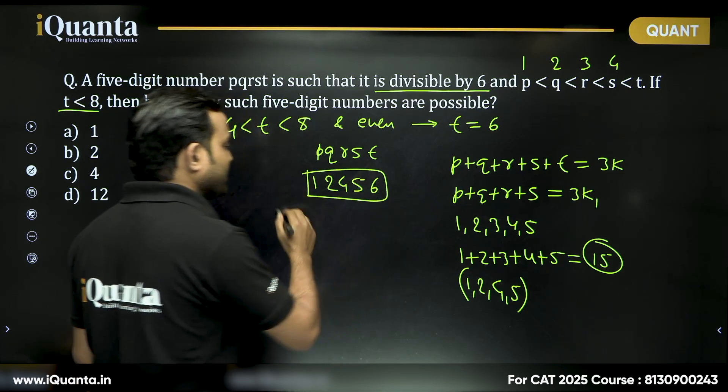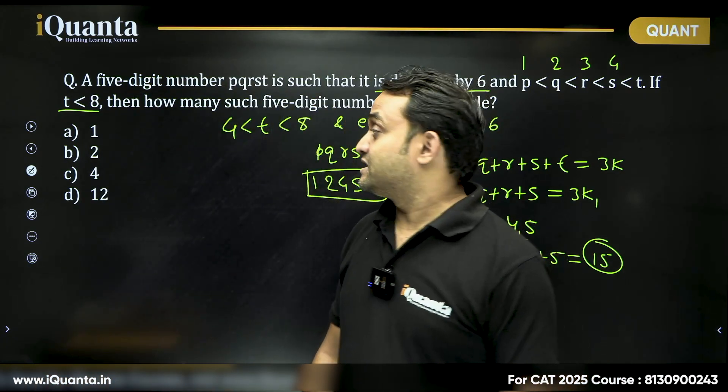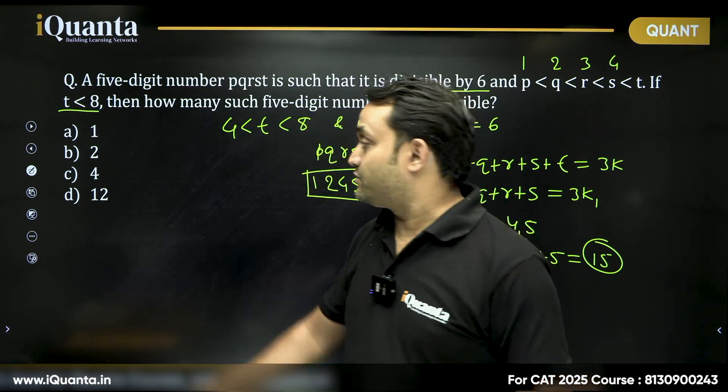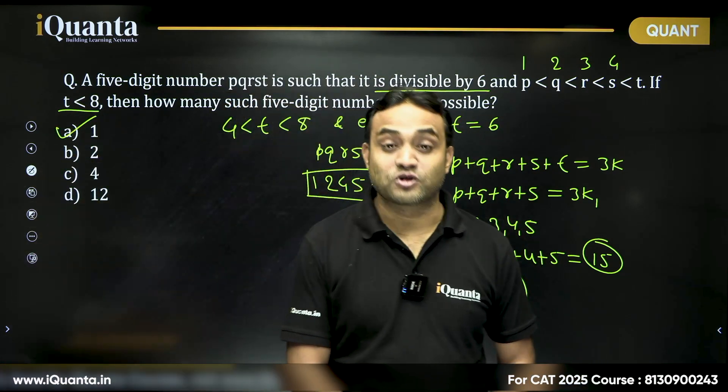So, our number is 1, 2, 4, 5, 6. So, there is exactly one such number, not more than that, right?